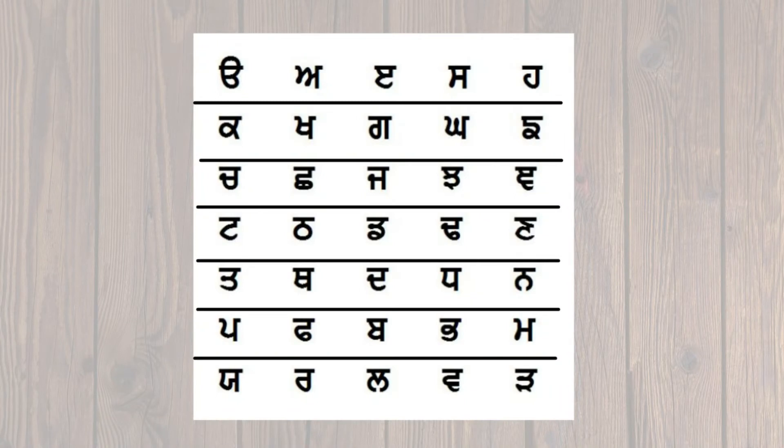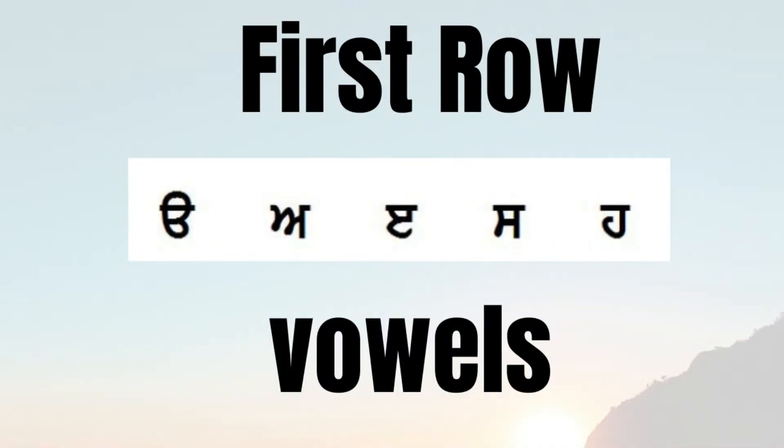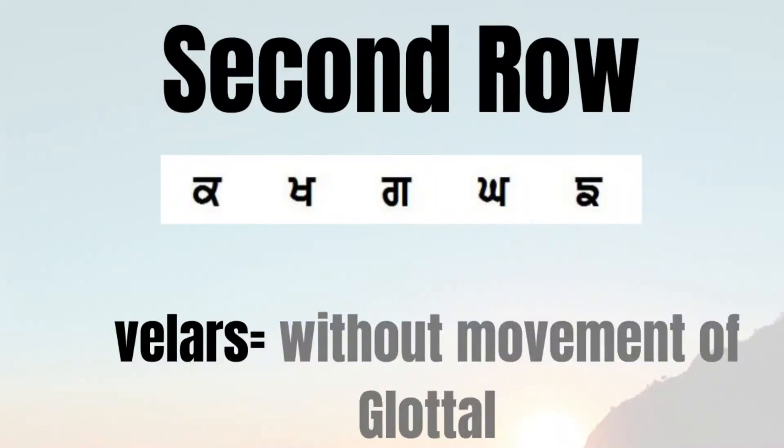In the 35 letters of Gurmukhi, the first row is known as laga matra, or vowels, which are used to connect with consonants to form a word. The second row is known as the velar consonants; they are pronounced unglottalized and are also known as the kevrag toli in the Gurmukhi script.